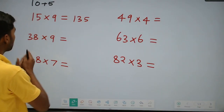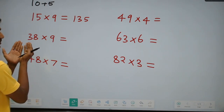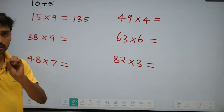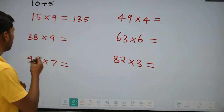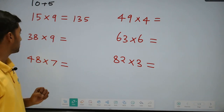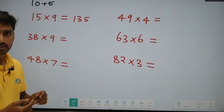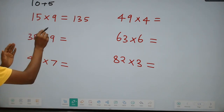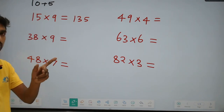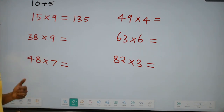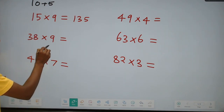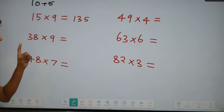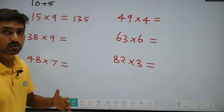90 plus 45 is 135. It is very simple. The same procedure — we are going to split 38 into 30 plus 8. Now, 30 into 9 is 270. Plus 8 into 9 — that is 38 into 9 — is 72. So 270 plus 72 is 342.